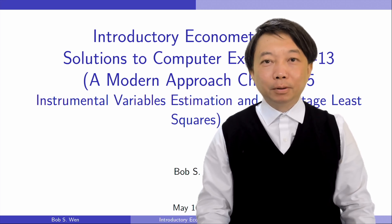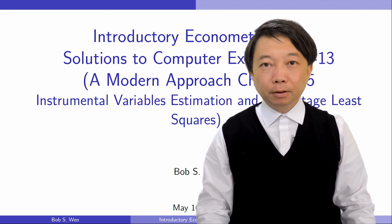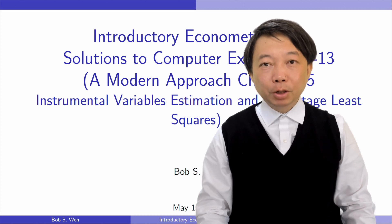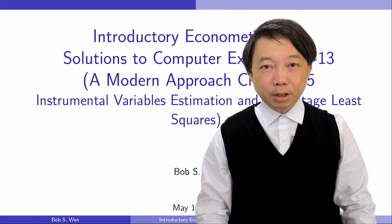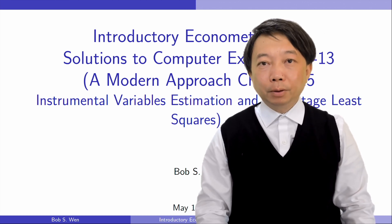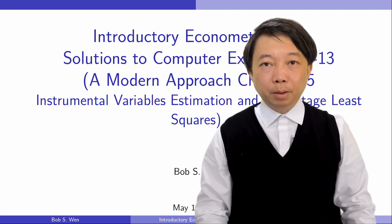Hi, I'm Bob. Let's finish the last three computer exercises for Chapter 15, Instrumental Variables Estimation and Two-Stage Least Squares, in the textbook Introductory Econometrics: A Modern Approach, the seventh edition by Professor Jeffrey Wooldridge. We will continue to use Stata to solve the problems.